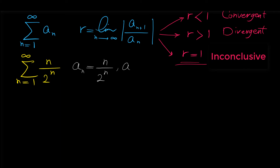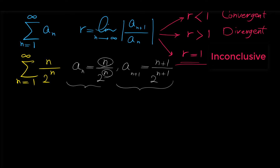Then a sub n plus one is n plus one over 2 to the power of n plus one. To find a sub n plus one, we replace every n in a sub n with n plus one.